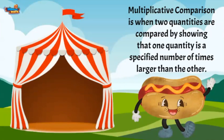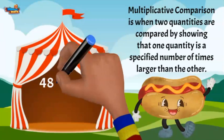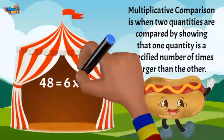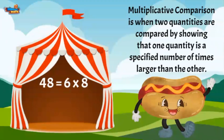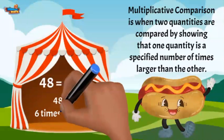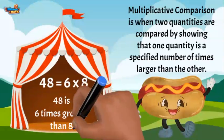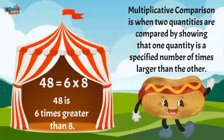Here's an example. I have the equation 48 equals 6 times 8. I can interpret this equation to mean 48 is 6 times greater than 8. That means if I have 8, and someone else has 6 times that amount, that would equal 48.